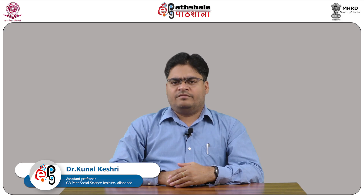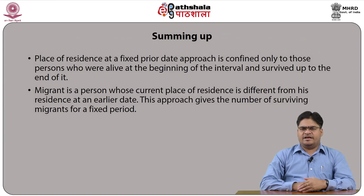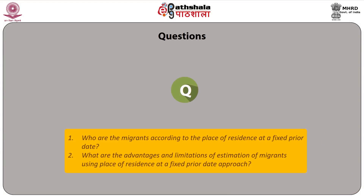So far we have learnt that the place of residence at a fixed prior date approach is confined only to those persons who were alive at the beginning of the interval and survived up to the end of it. A person whose current place of residence is different from his residence at an earlier date is identified as a migrant. This approach gives the number of surviving migrants for a fixed period. Review questions: Who are the migrants according to the place of residence at a fixed prior date? What are the advantages and limitations of this approach? Thank you, students.